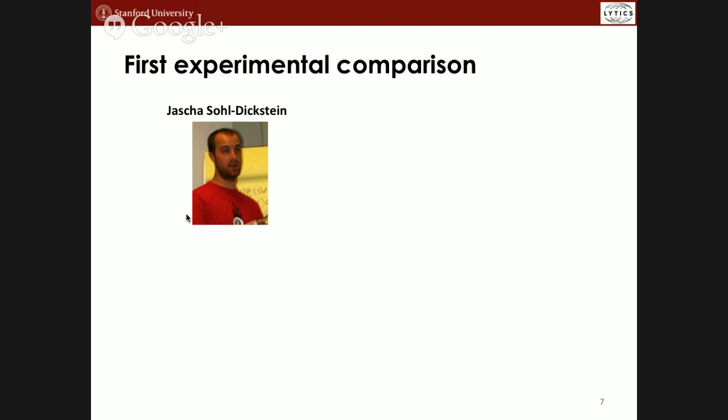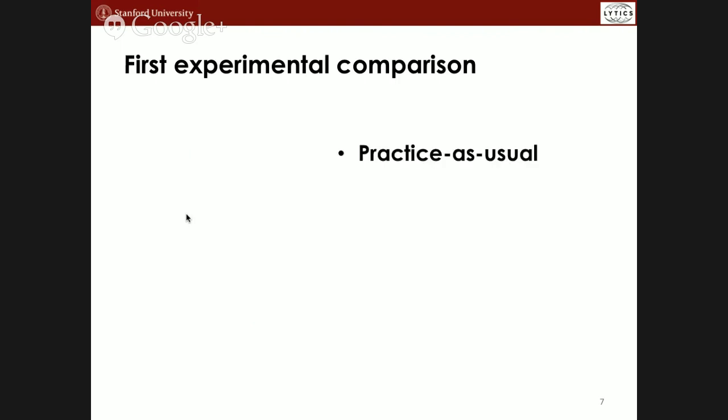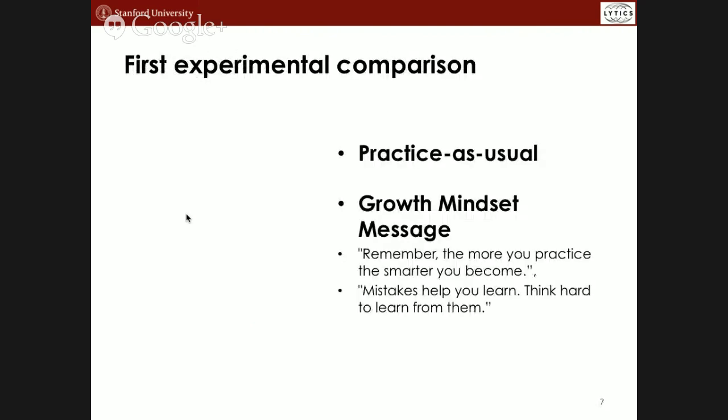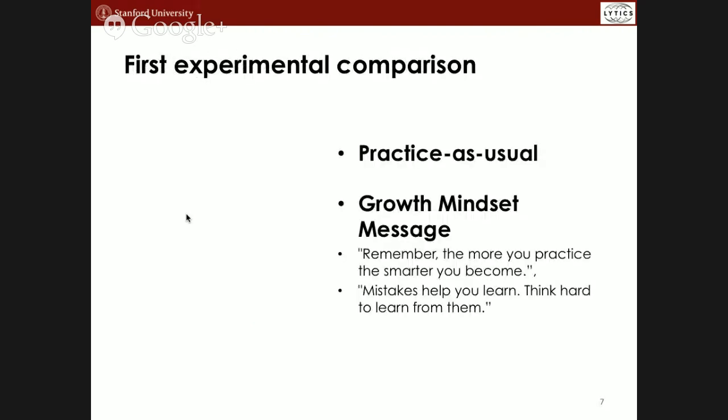The first experiment comparison was conducted in collaboration with Joshua Spodek, who works half-time at Khan Academy, and also people in Carol Dweck's lab — David Parnescu and Ben Hilling. It was done across 12 fractions exercises, aggregated roughly across two months.